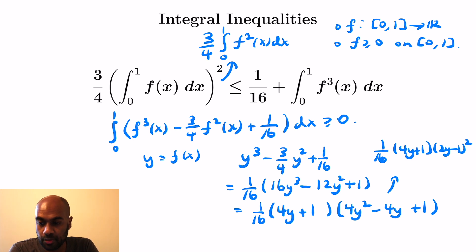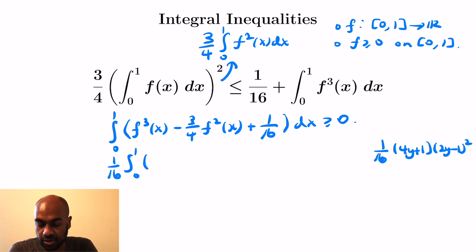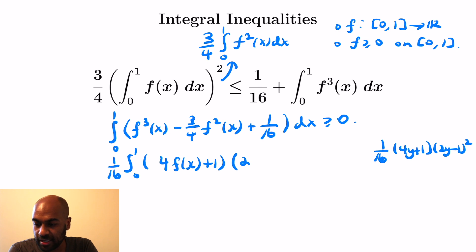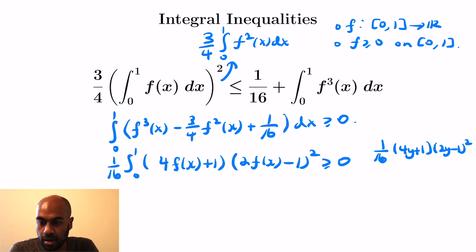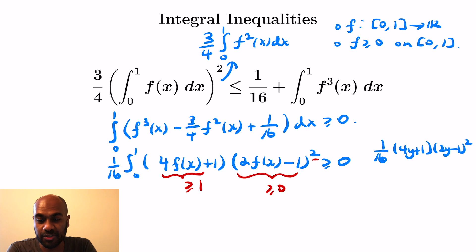This factors as one-sixteenth times the quantity 4y plus 1, multiplied by 2y minus 1, all squared. Re-substituting f of x, we get the integral from 0 to 1 of one-sixteenth times 4f(x) plus 1 times the quantity 2f(x) minus 1, all squared. Our function was assumed to be non-negative, so multiplying by 4 and adding 1 gives something greater than or equal to 1. The quantity 2f(x) minus 1 all squared is non-negative as a square, so we get our non-negativity.